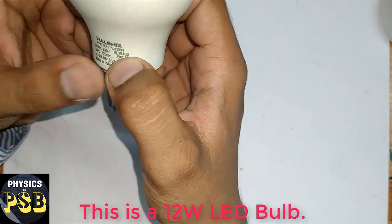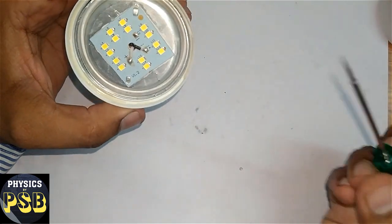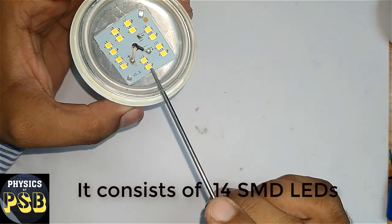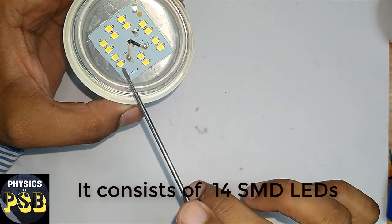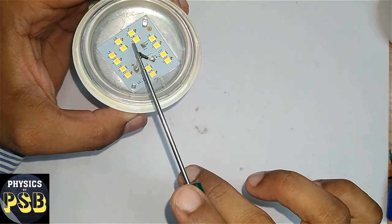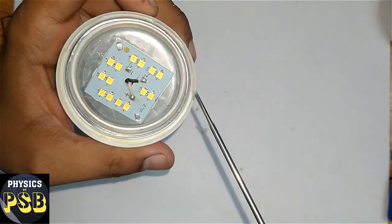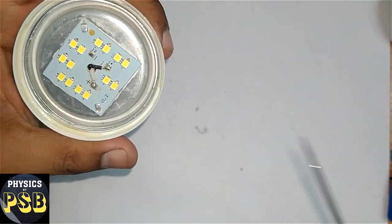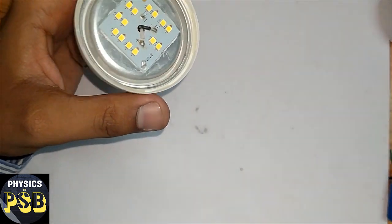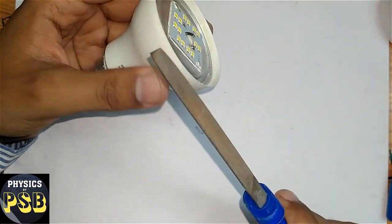This is a 12-watt LED bulb, so it consists of around 14 LEDs. These are all SMD LEDs. I'll show you how to remove the heat sink. For this, gently hit this part.